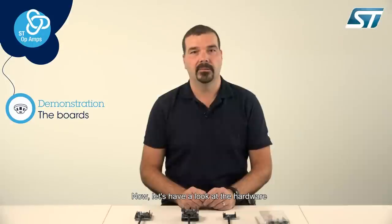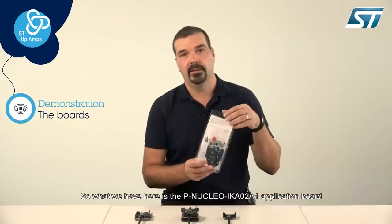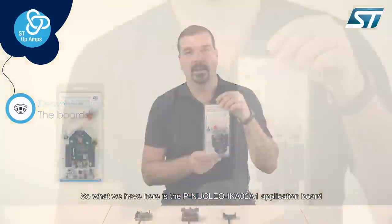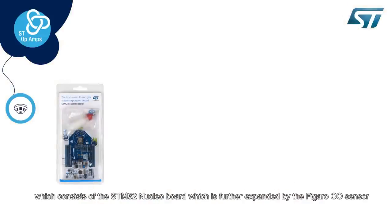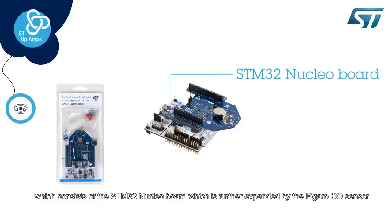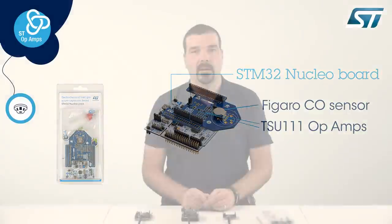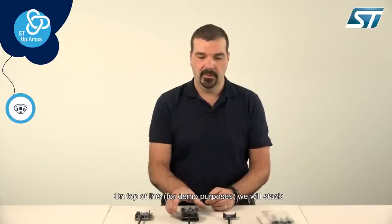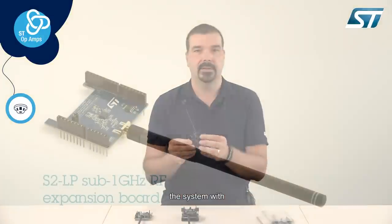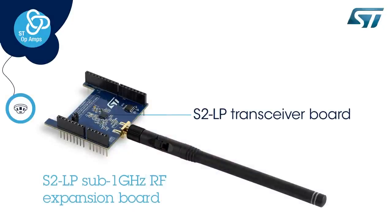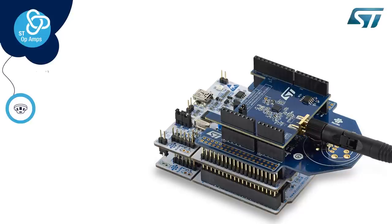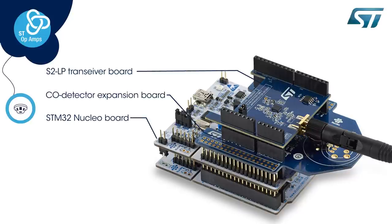Now let's have a look at the hardware. What we have here is the PNucleo IKA-02A1 application board, which consists of an STM32 Nucleo board, which is further expanded by the Figaro carbon monoxide sensor, linked with the TSU-111 operational amplifier. On top of this, for demo purposes, we will stack the system with the S2LP sub-Gigahertz RF transceiver expansion board and a battery board in order to get a wireless CO detector sensor board.